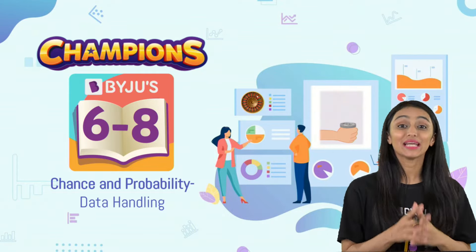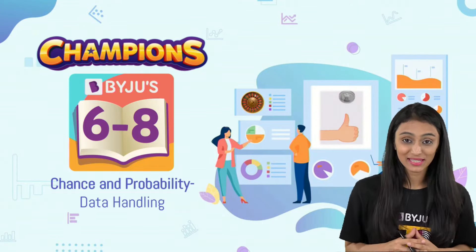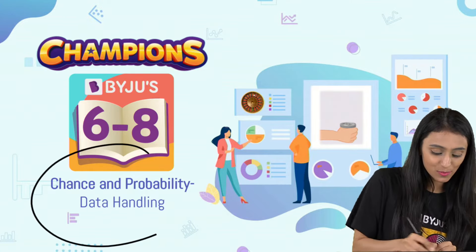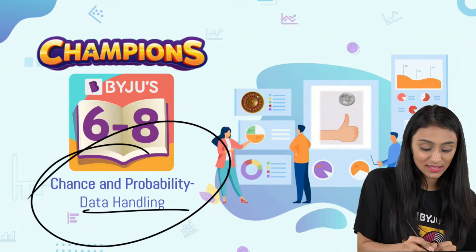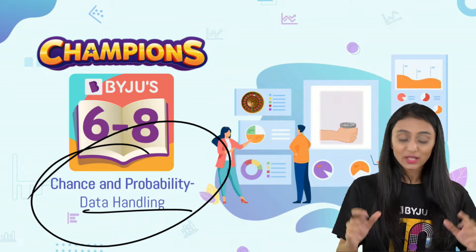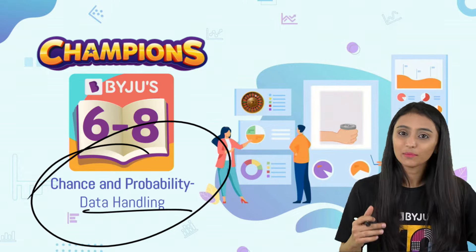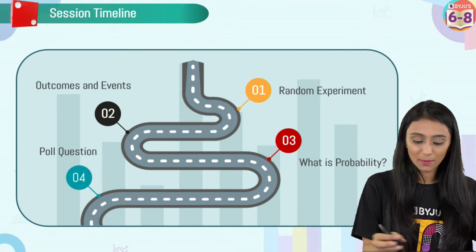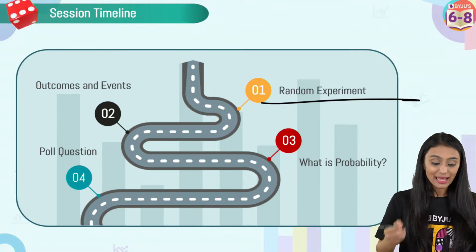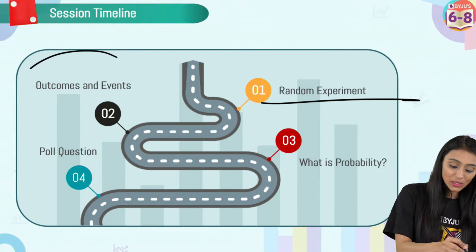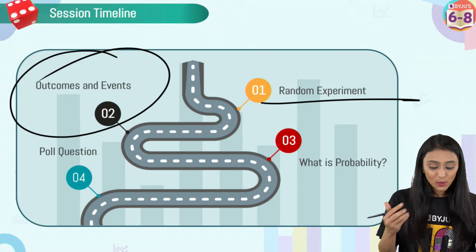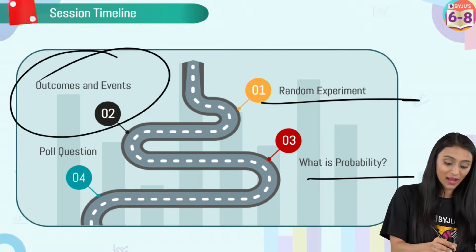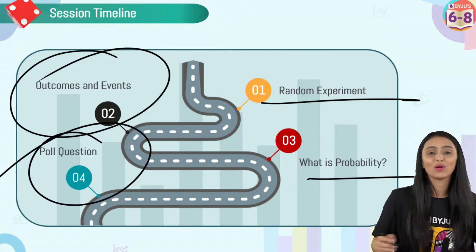Welcome to today's session on chance and probability, from the topic of data handling. We'll cover random experiments, outcomes and events, what probability actually is, and end with a poll question to check your understanding.